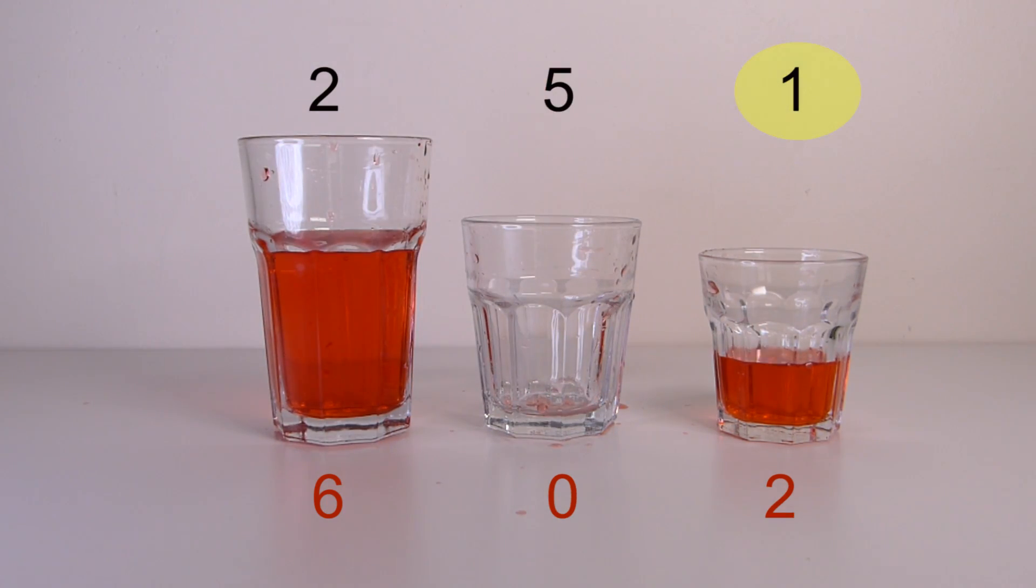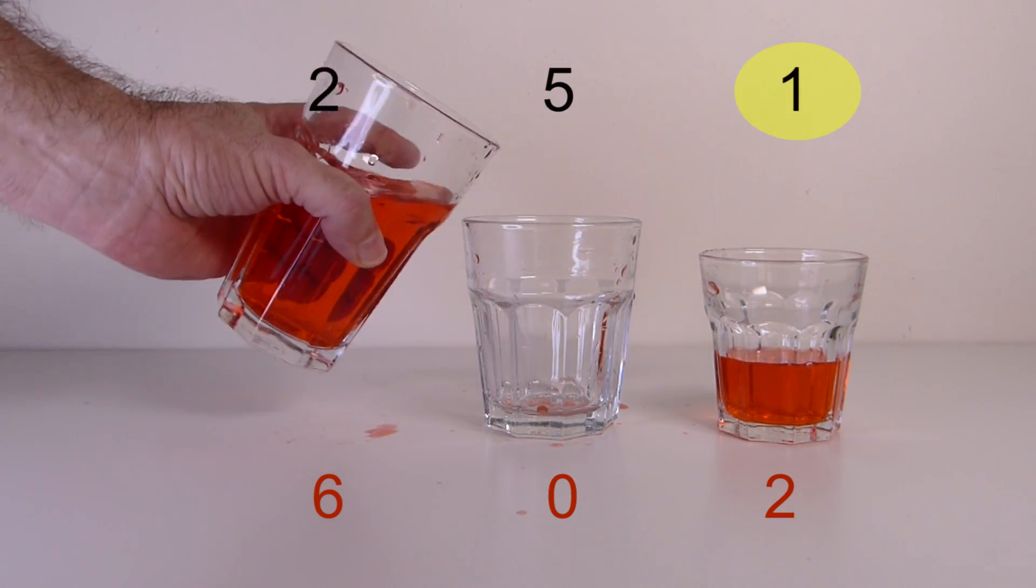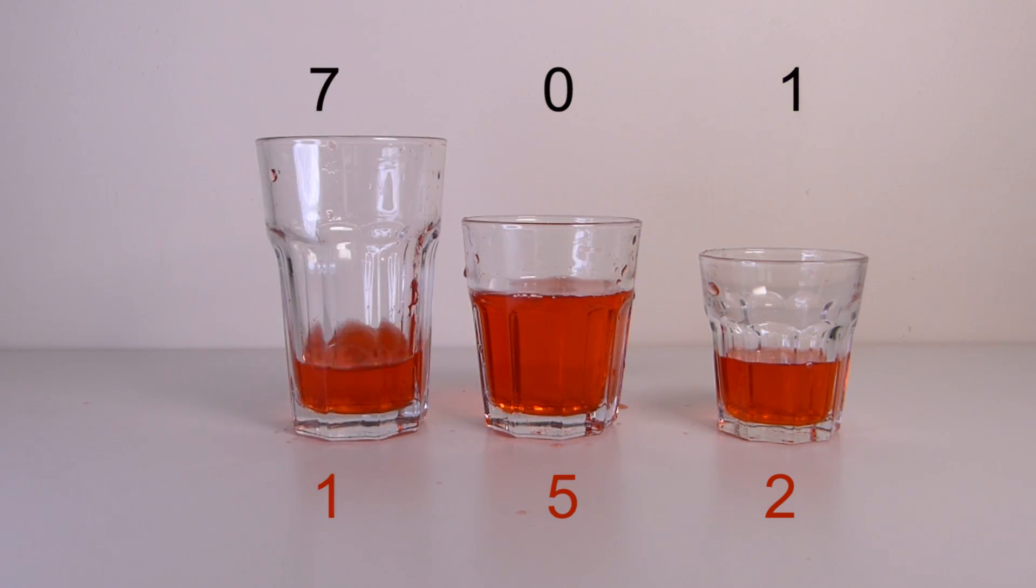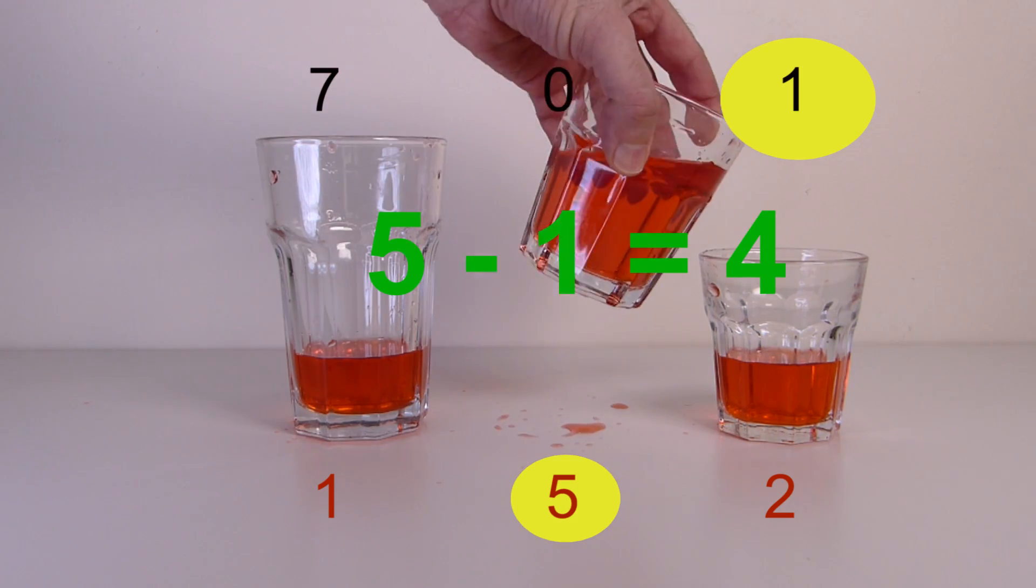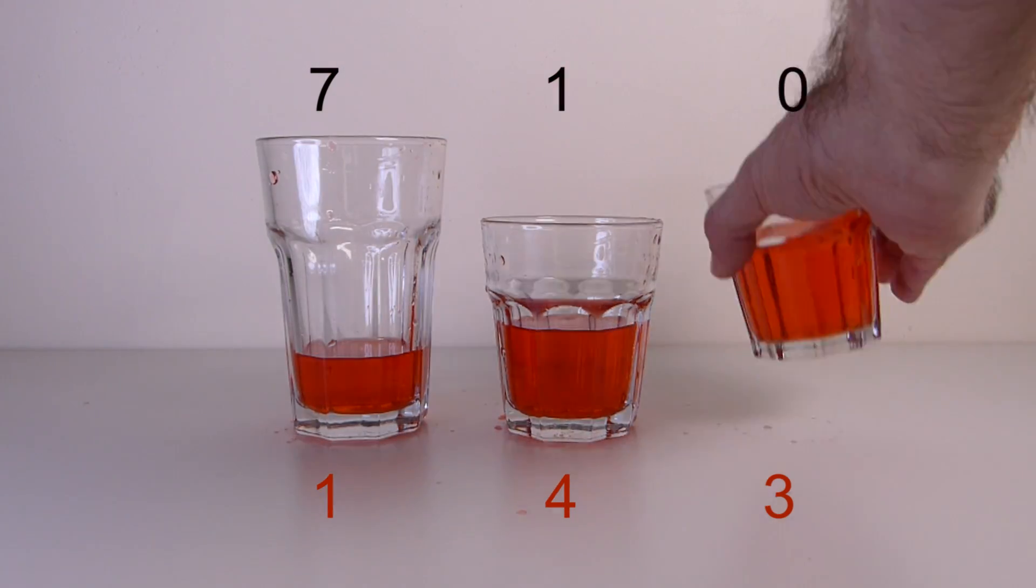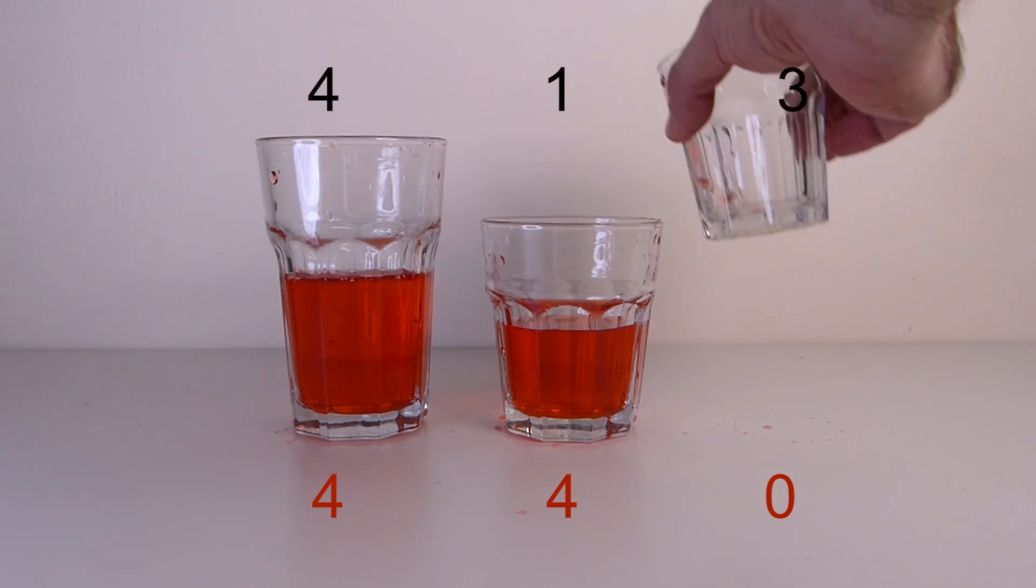Now we have one ounce of empty space in the smallest glass. Which means if we measure five ounces into the middle glass and pour out some into the three-ounce glass, we're left with four ounces. What's left in the other two glasses can be combined and must, of course, be four ounces.